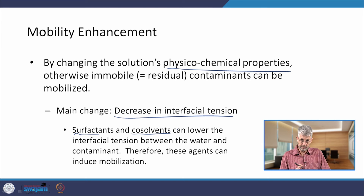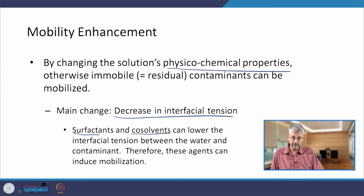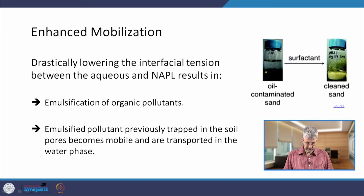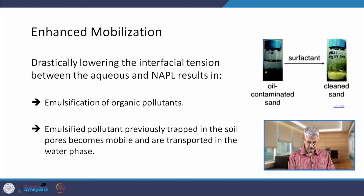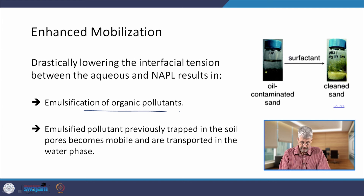Cyclodextrin, the third compound, does not dramatically reduce the interfacial tension — that's a big difference from surfactants and co-solvents. By lowering the interfacial tension between the aqueous and NAPL phases, the result is emulsification of the organic pollutants. The emulsified pollutants can then leave the soil pores, become mobile, and be transported in the moving groundwater.